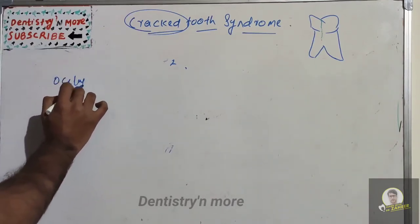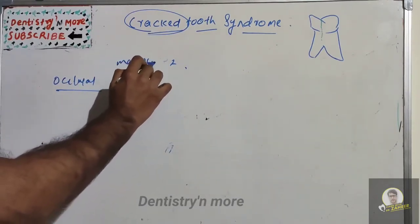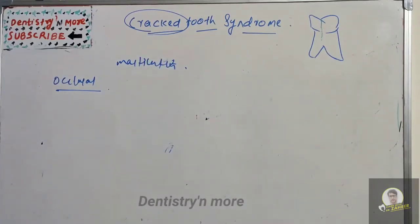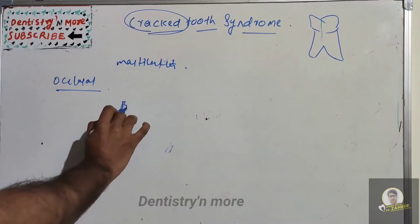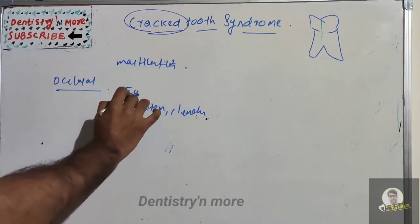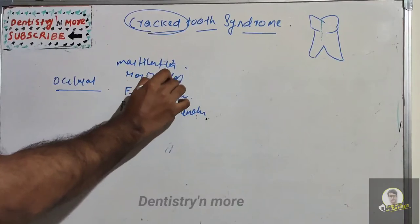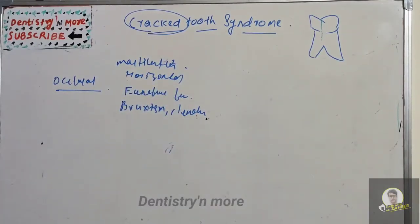The etiology of Crack Tooth Syndrome can be classified. The first category is occlusal etiology. This includes masticatory accidents such as sudden and excessive biting force on a piece of bone, damaging horizontal force such as eccentric contacts and interferences, functional force like large untreated caries lesions, and para-functional forces such as bruxism or clenching.